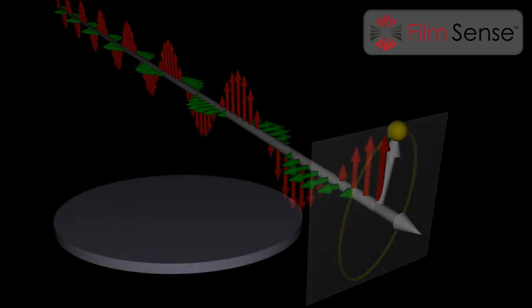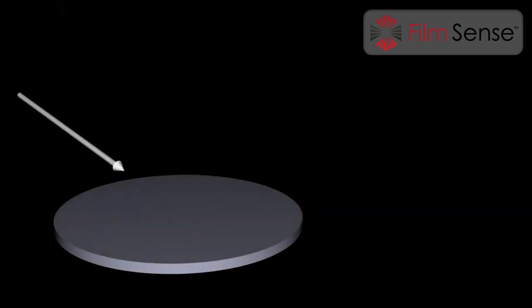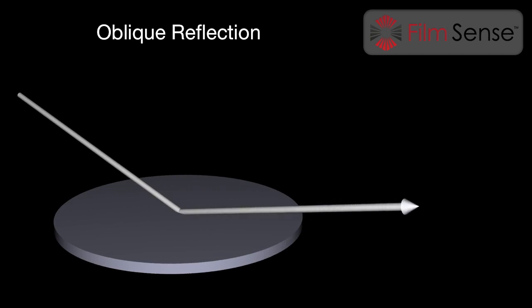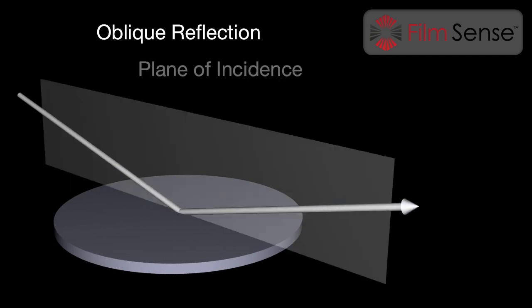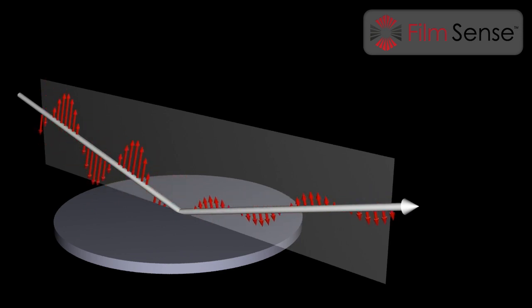Now let's consider the reflection of polarized light from a sample. When light is obliquely reflected from a sample, the incident and reflected beams define a plane of incidence. Light, with its electric field vector oscillating in the plane of incidence, is called p-polarized light.